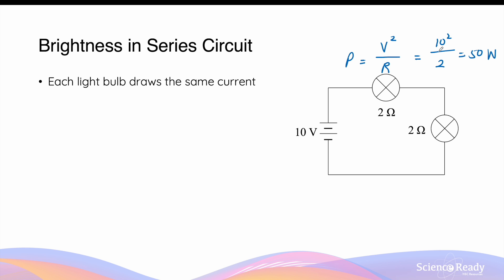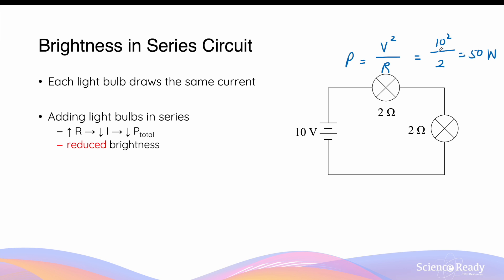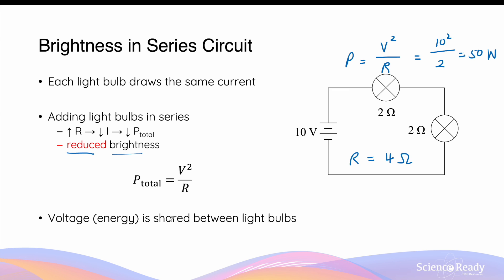By adding this light bulb in series, I've effectively increased the resistance from just 2 ohms to 4 ohms. Remember, in a series circuit the total resistance is simply the sum of the resistances of all the components. Since the voltage of the circuit is kept constant, a higher resistance will result in a lower current by Ohm's law, and therefore the total power of the circuit is also reduced. The reduced power is then shared between the two light bulbs, which means each light bulb will receive a smaller amount of energy, so the light bulbs will have reduced brightness.